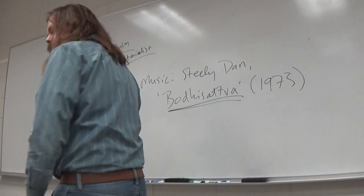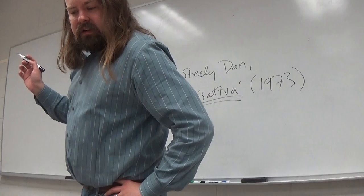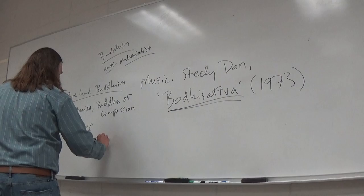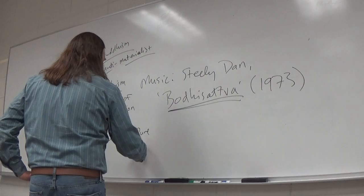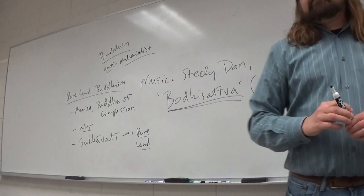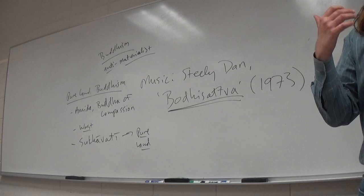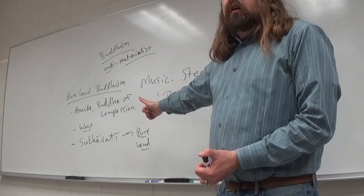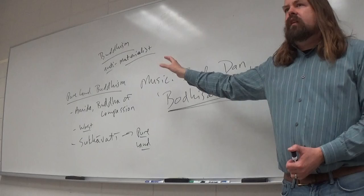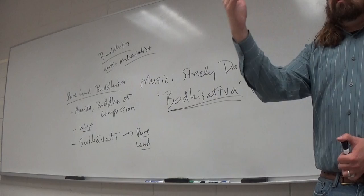Each cardinal direction has its own Buddha in most schools of thought. Amida is the Buddha of the West and he's the ruler of a plane of existence called Sukhavati - a Sanskrit word that translates to Pure Land.